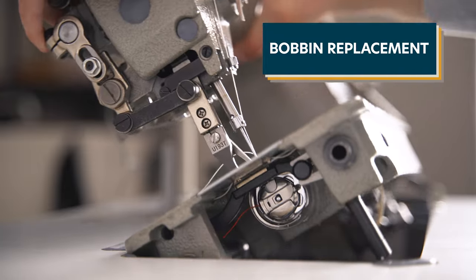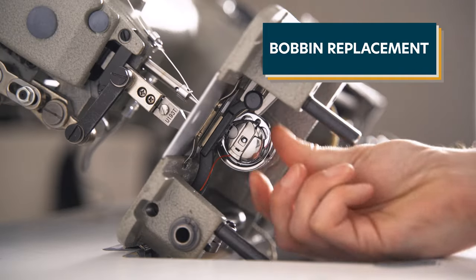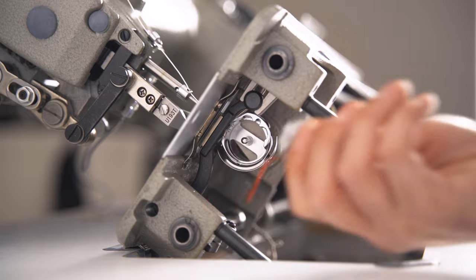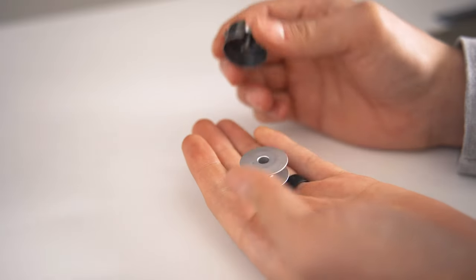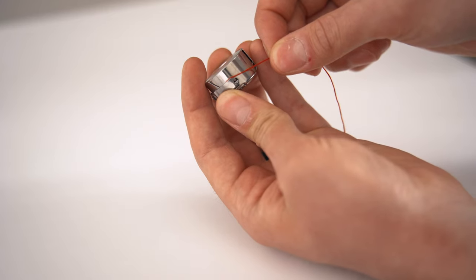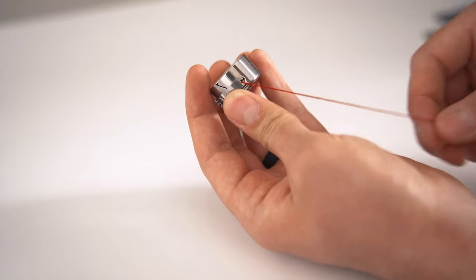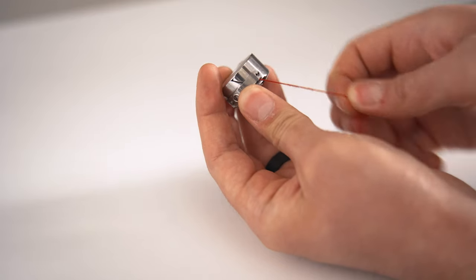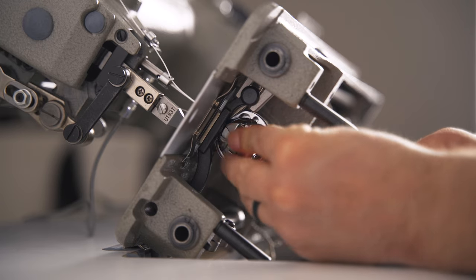To replace your bobbin, tilt the machine head back to expose the bobbin case. Remove the bobbin case by lifting the tab. Remove the old bobbin and slide the new bobbin in so that the thread unwinds clockwise. Slide the thread into the slot located on the bobbin case and pull out 8 to 10 inches of thread. Then snap the bobbin case back into place.